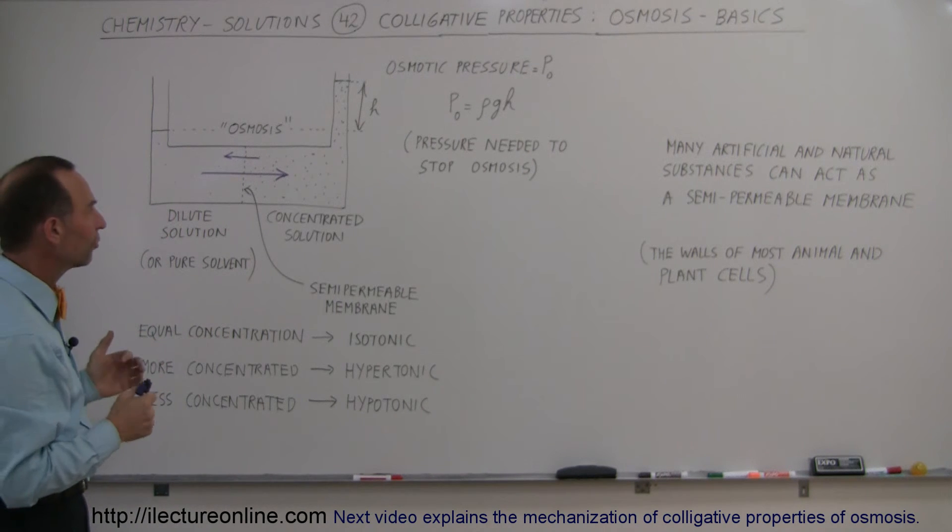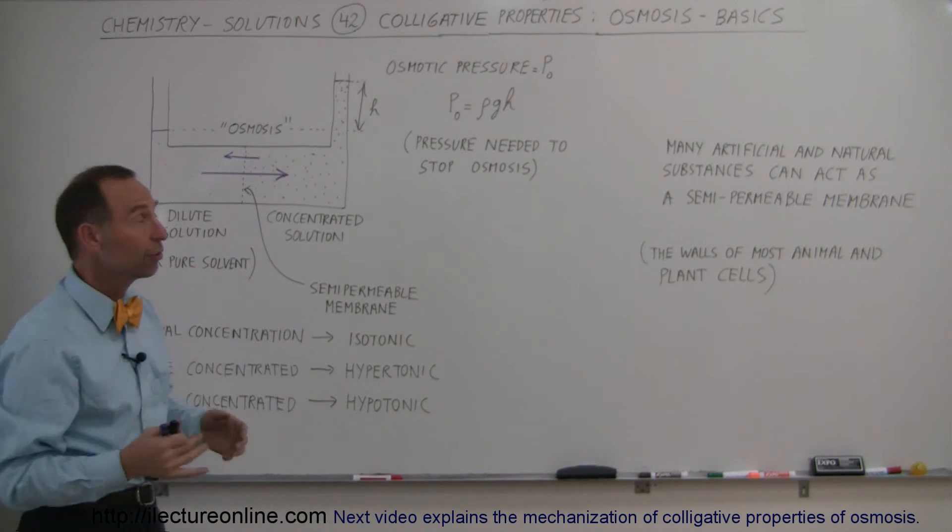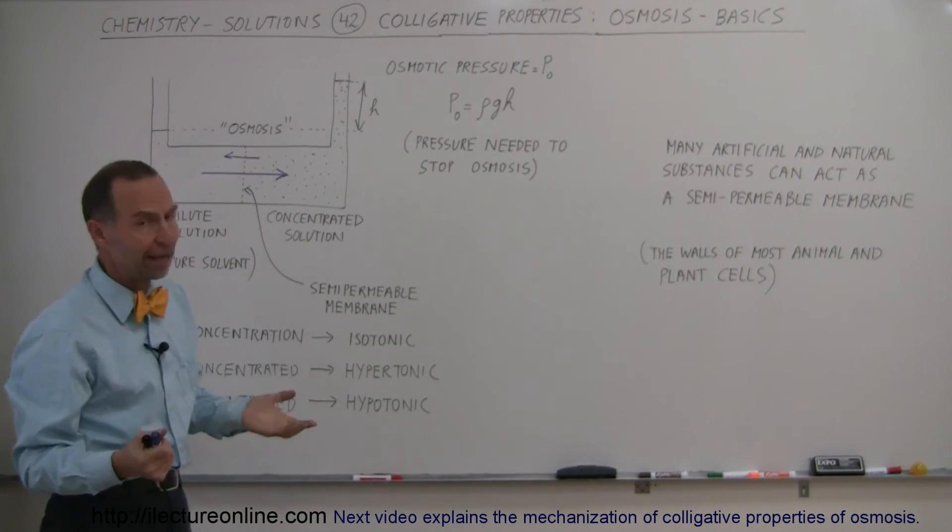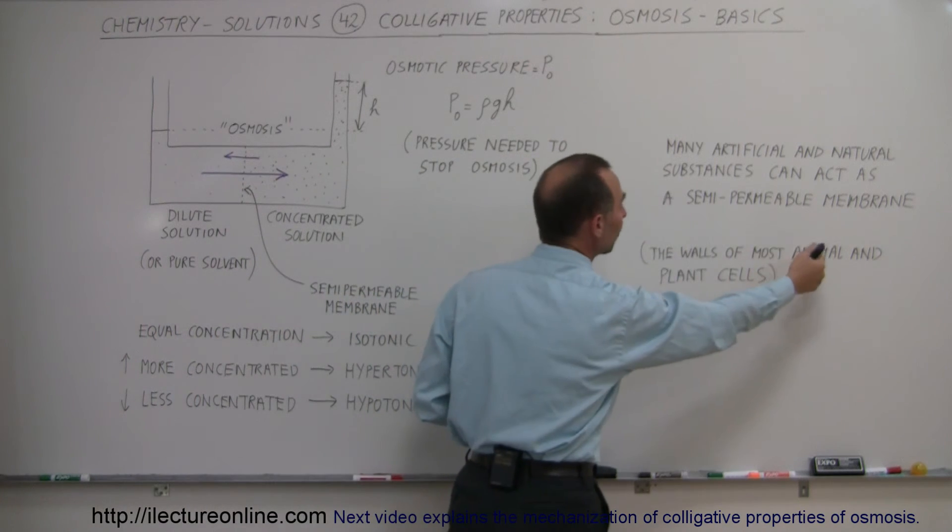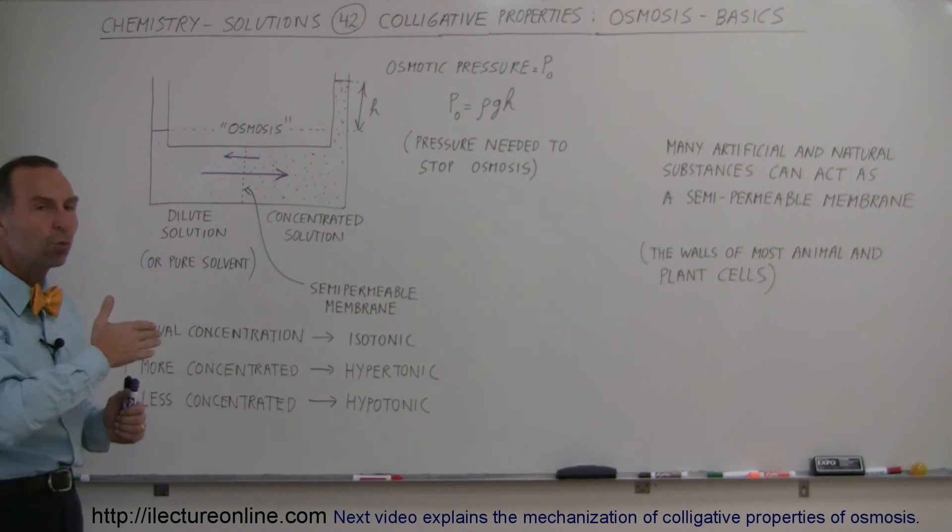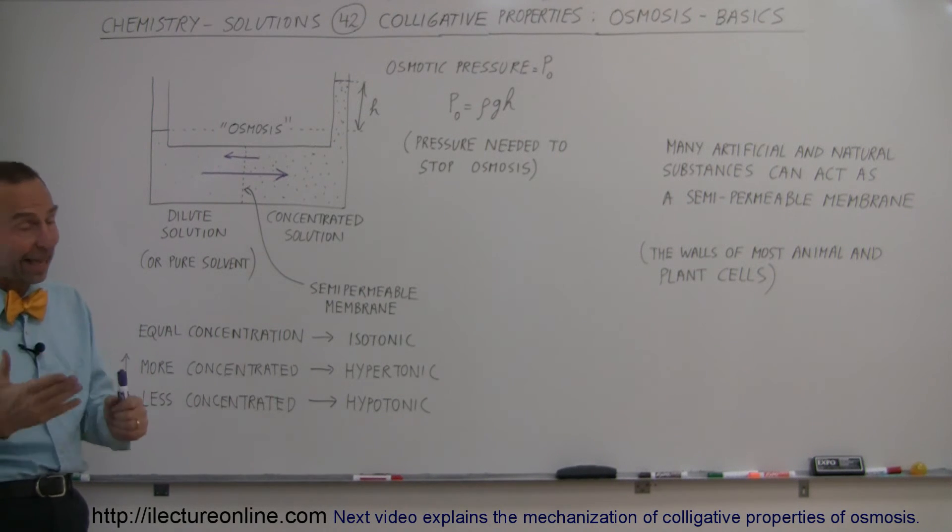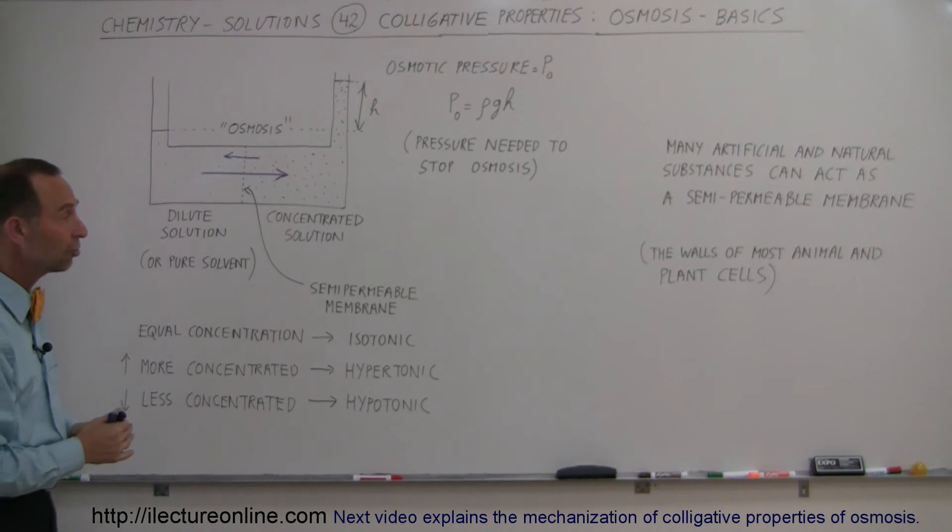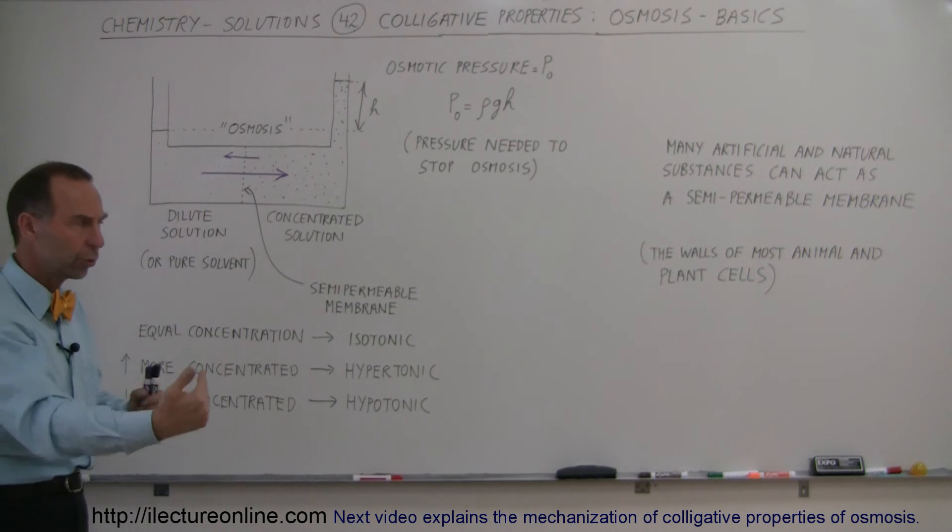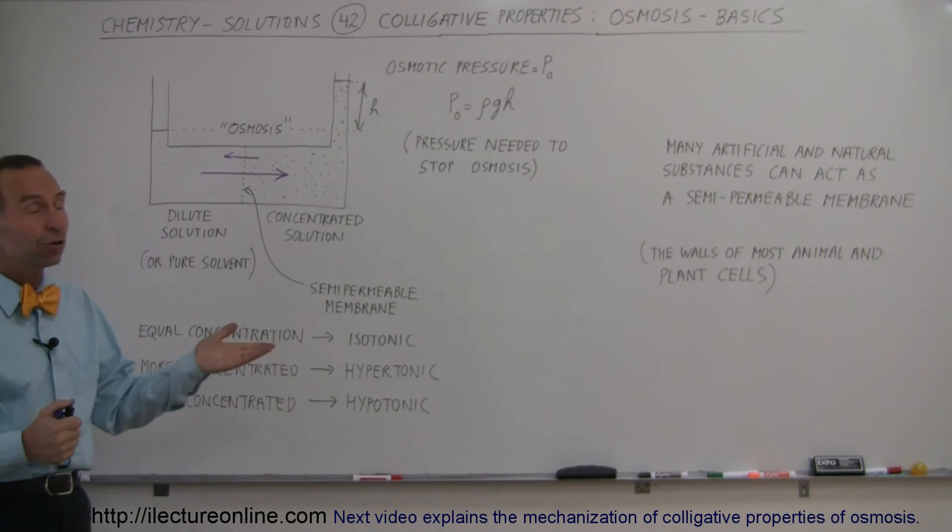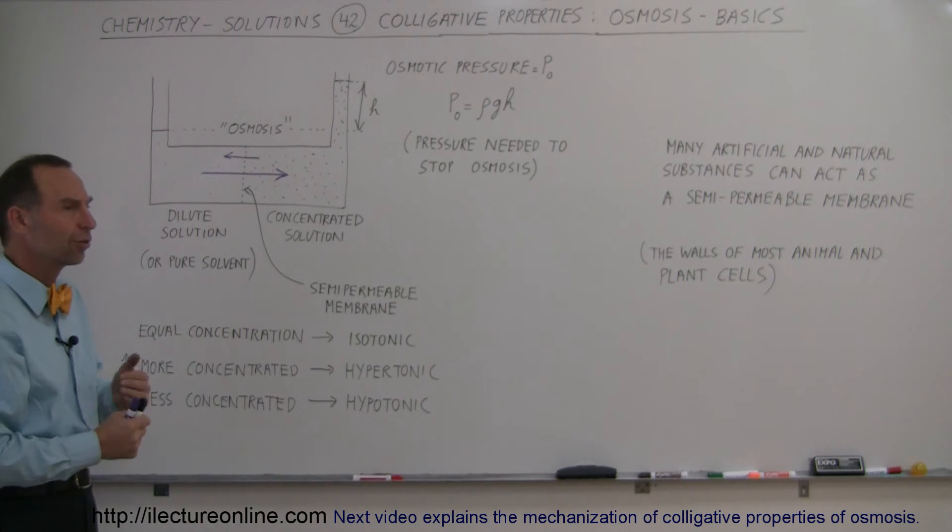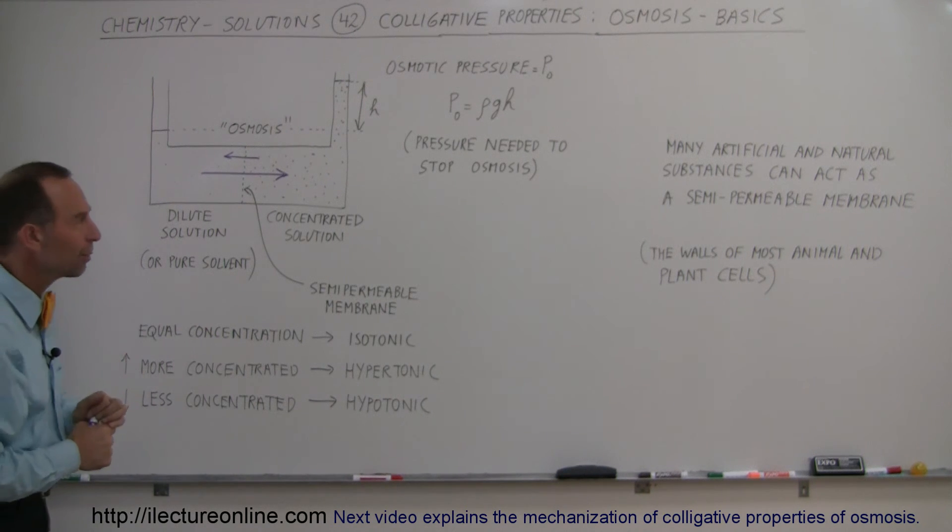Now, many substances in nature as well as artificial substances do have the ability to act as a semipermeable membrane. Matter of fact, in nature, just about all the walls of most animal and plant cells are semipermeable, which means they can pass water, or they will, not just that they can, but they will pass water, which is the typical solvent in nature, from the lower concentration to the higher concentration, either into the cell or out of the cell. And in later videos, we'll show you what the result of that is and sometimes there's good results from that and sometimes there's detrimental results.